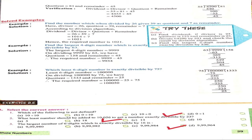Question number 3: the largest 6-digit number which is exactly divisible by 16 is? The largest 6-digit number is 9,99,999. We divide it by 16: quotient is 62,499 and remainder is 15. Next step: subtract 15 from 9,99,999. So our answer is 9,99,984. Option C is correct.